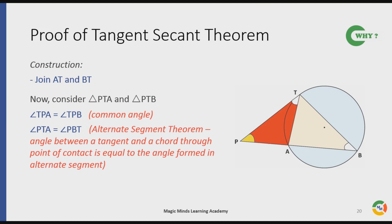Here, angle PTA is the angle between the tangent PT and chord AT through the point of contact T. Now this angle will be equal to the angle formed by this chord, that is AT, in the alternate segment, which is angle PBT. Hence, angle PTA equals angle PBT by Alternate Segment Theorem.